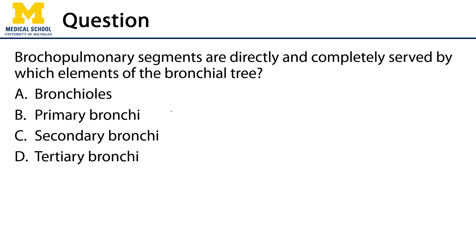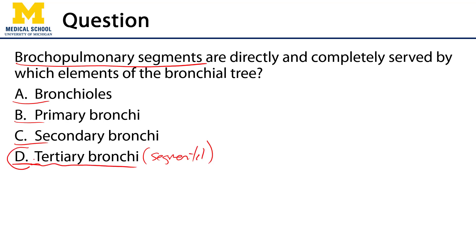The assessment question for this video: bronchopulmonary segments are directly and completely served by which elements of the bronchial tree? Bronchioles, primary bronchi, secondary bronchi, or tertiary bronchi? Bronchopulmonary segments are supplied by segmental bronchi — those are tertiary bronchi. The correct answer is D. Secondary bronchi serve lobes; primary bronchi serve lungs. Thank you very much for your time.